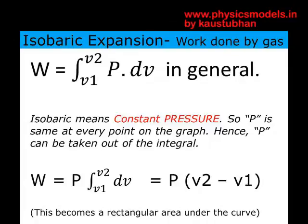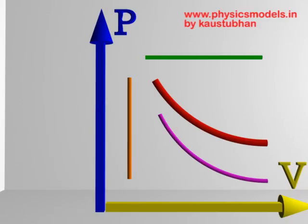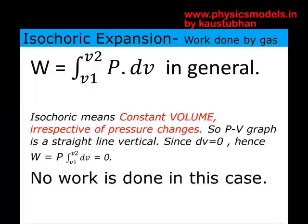For any work done by the gas on the piston keeping pressure constant throughout the quasi-static process, you use the equation W = P·(V2 - V1). The remaining graph is the vertical one — the isochoric process — where pressure changes but volume stays the same; the piston is not moving at all. Using the general formula, work done is the integral of P·dV, but dV itself is zero, so the work done is zero. There is no work done in an isochoric process.